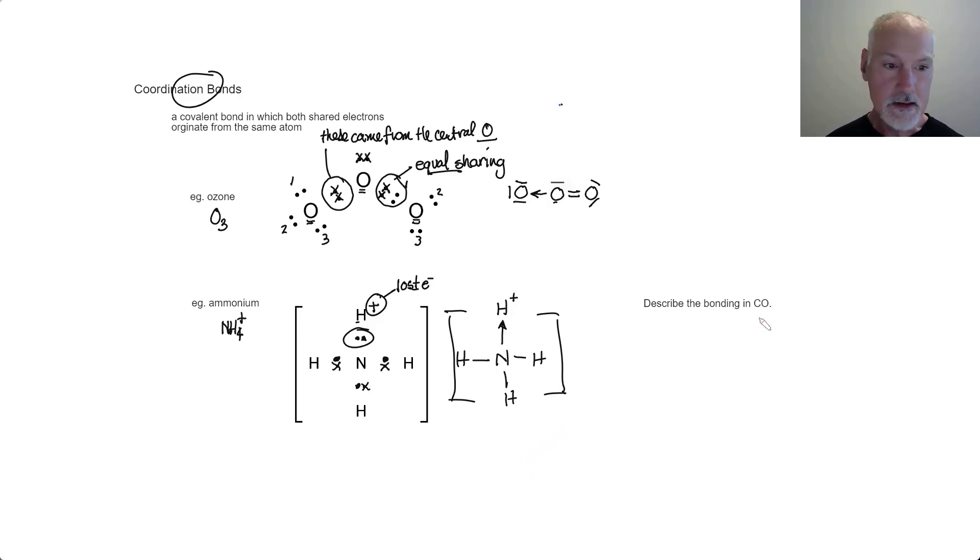Let's take a look at the bonding in carbon monoxide, sort of describe how it occurs. So carbon's got four valence electrons and oxygen, six. So I've got a total here of 10 electrons.